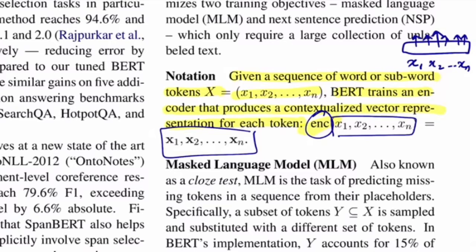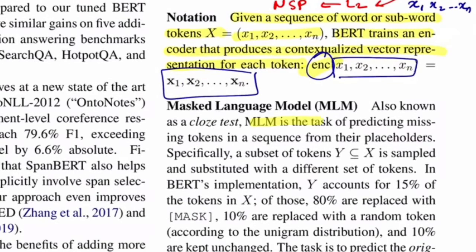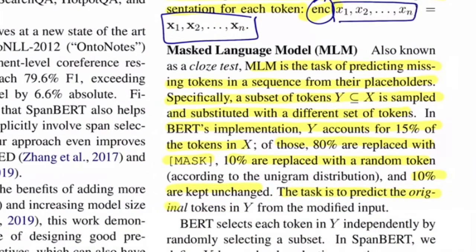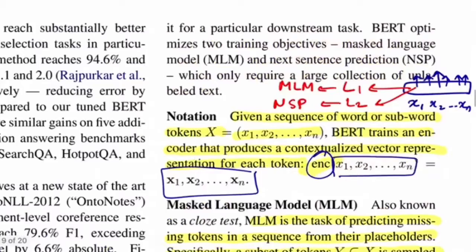The original BERT paper uses two loss functions: L1 being masked language modeling and L2 being NSP (next sentence prediction). For MLM, a subset of tokens Y in X is sampled and substituted. In BERT's implementation, Y accounts for 15 percent of tokens: 80 percent are replaced with a mask token, 10 percent with a random token, and 10 percent are kept unchanged. The task is to predict the original token.